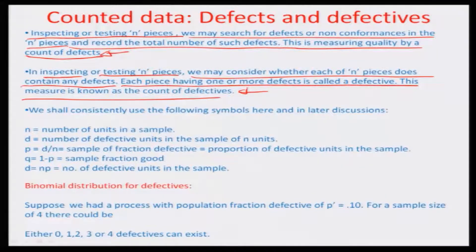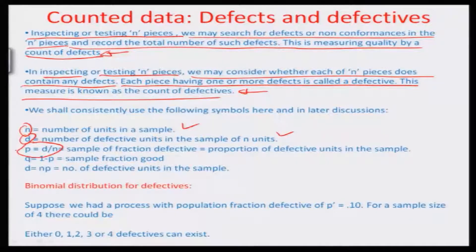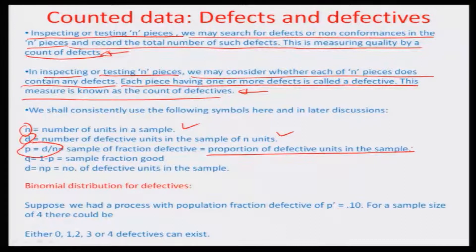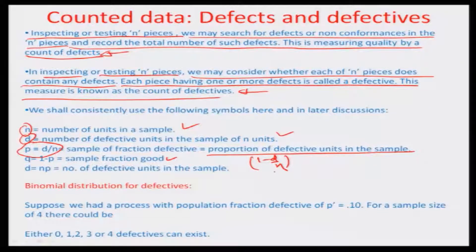We will consistently use the following symbols: N is the number of units in a sample, D is the number of defective units in sample N, and therefore the probability of having a defective — which is also the fraction defective — is D by N. This is basically indicative of the proportion of defective units in the sample. The number of good units as a proportion is 1 minus p, or 1 minus D by N, meaning exactly N minus D units are good relative to the total sample size N.